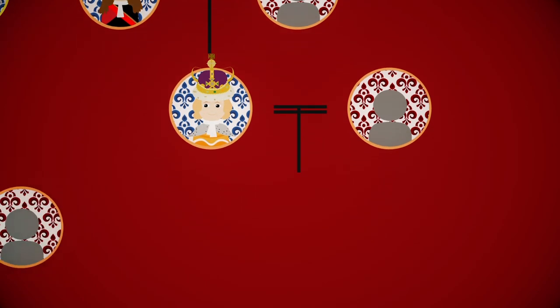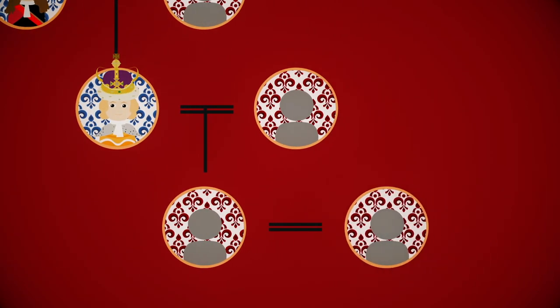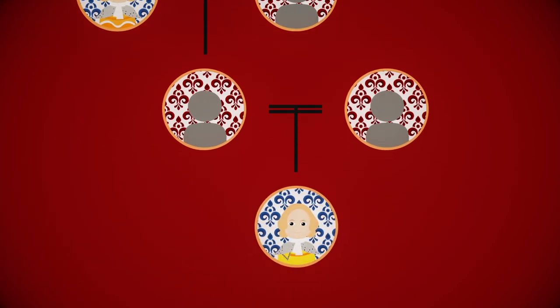George's son George had a son Frederick, but he outlived his son by nine years, so after Frederick's death, his grandson George, the son of George's son's son, George III, became king.